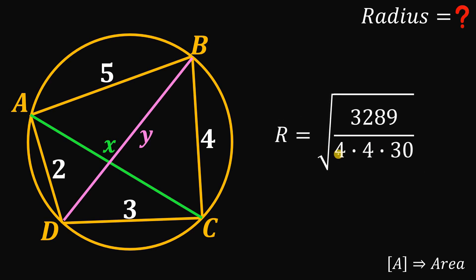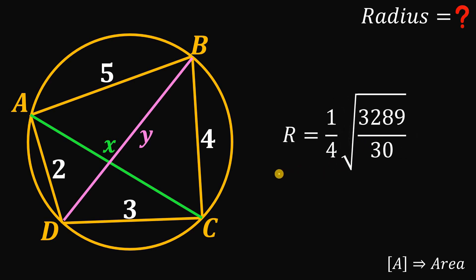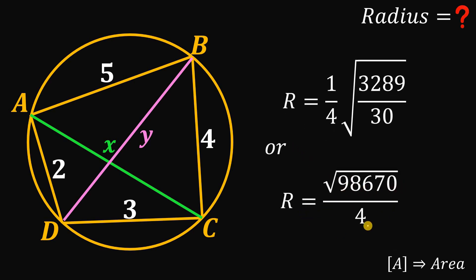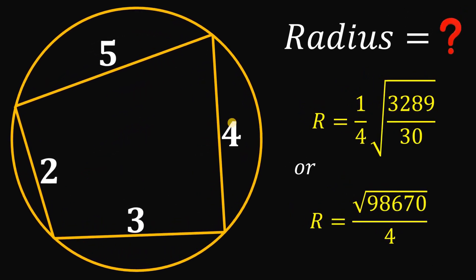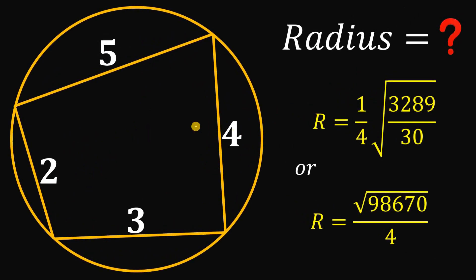Substituting back: R² equals 3,289 divided by (4 times 120), and since 4 times 4 is 16 in the denominator, we can simplify. Taking the square root of both sides, the radius R equals one-quarter times the square root of 3,289 over 30. We can also rationalize this as the square root of 98,670 all over 4 units. And that is the answer to this question.